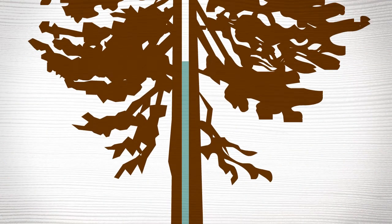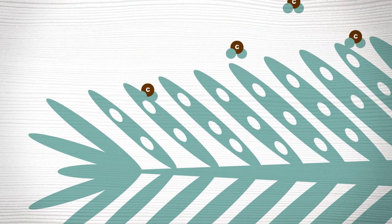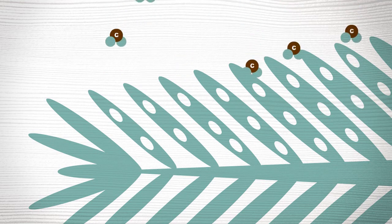Trees absorb water through their roots and carry it to their leaves and needles. At the same time, tiny holes in the leaves and needles absorb carbon dioxide from the air.